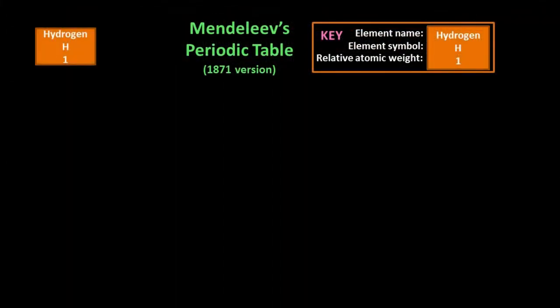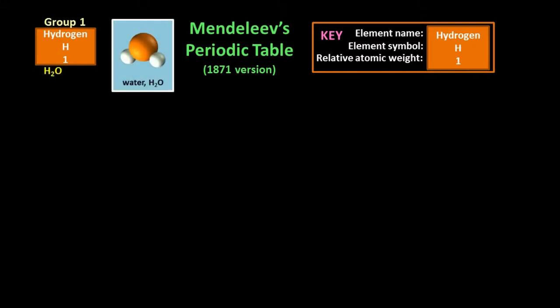He first placed hydrogen at the top of what he called group 1. He knew that when hydrogen reacts with oxygen, it produces water, H2O. The ratio of hydrogen atoms to oxygen atoms in H2O is 2 to 1. Why is this important?